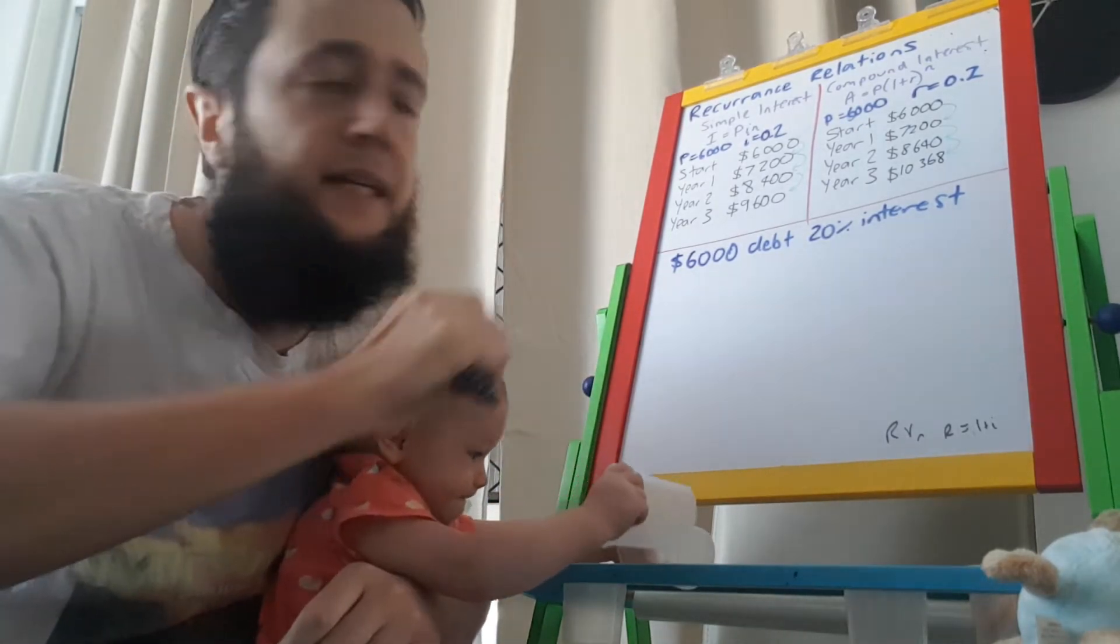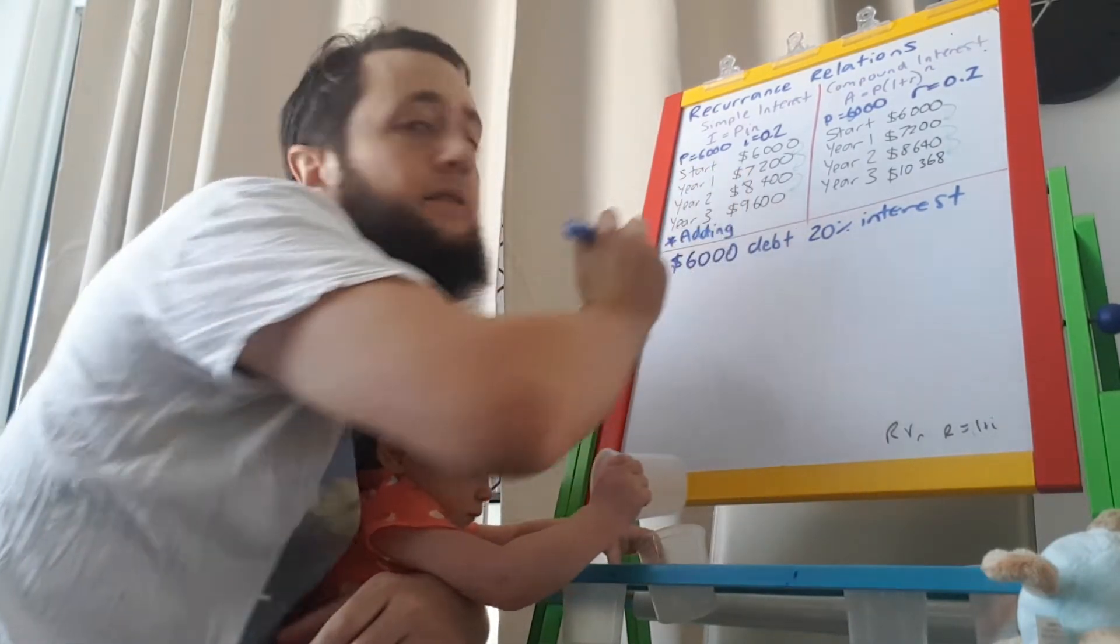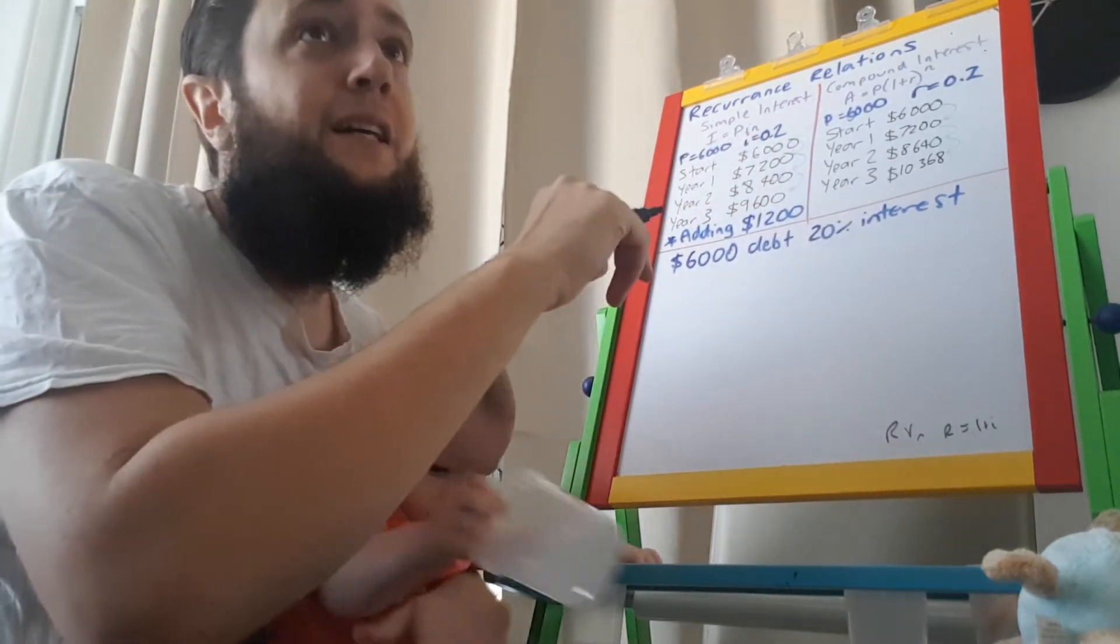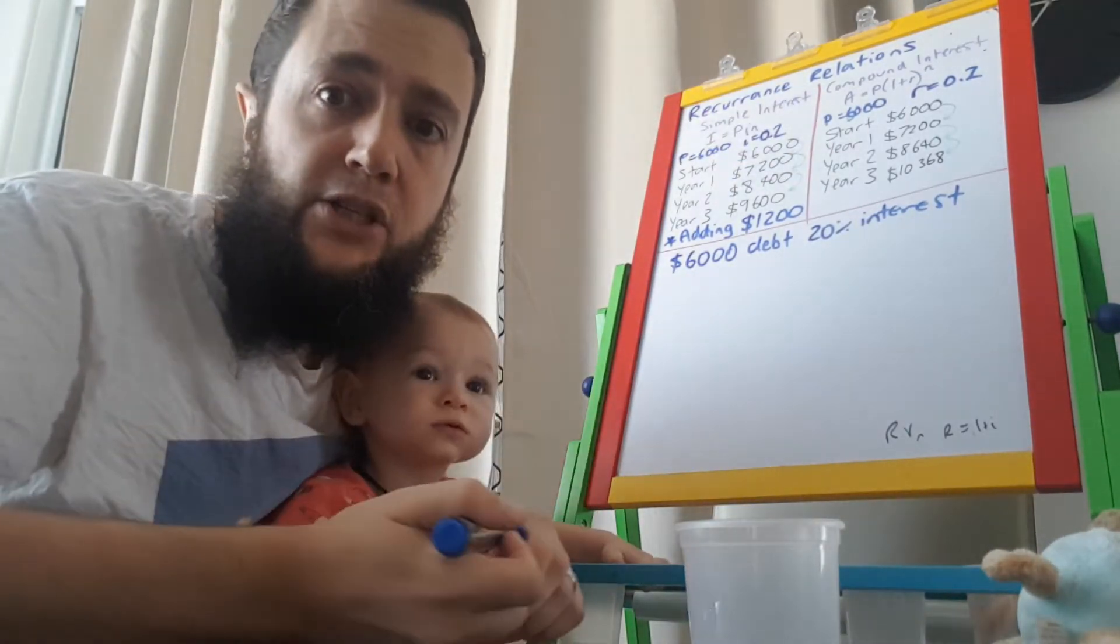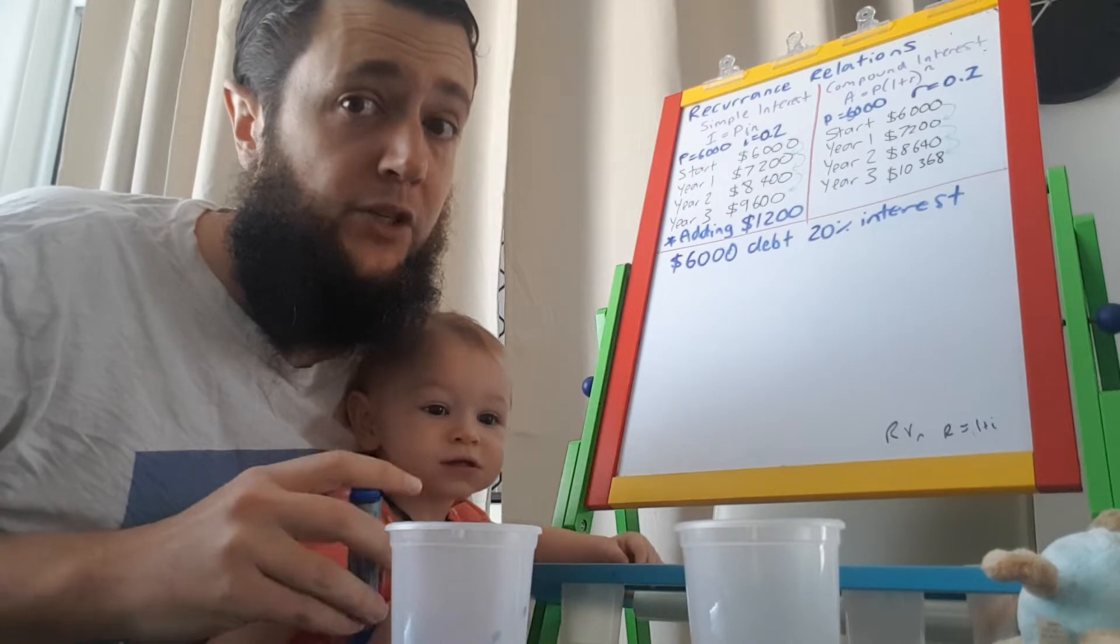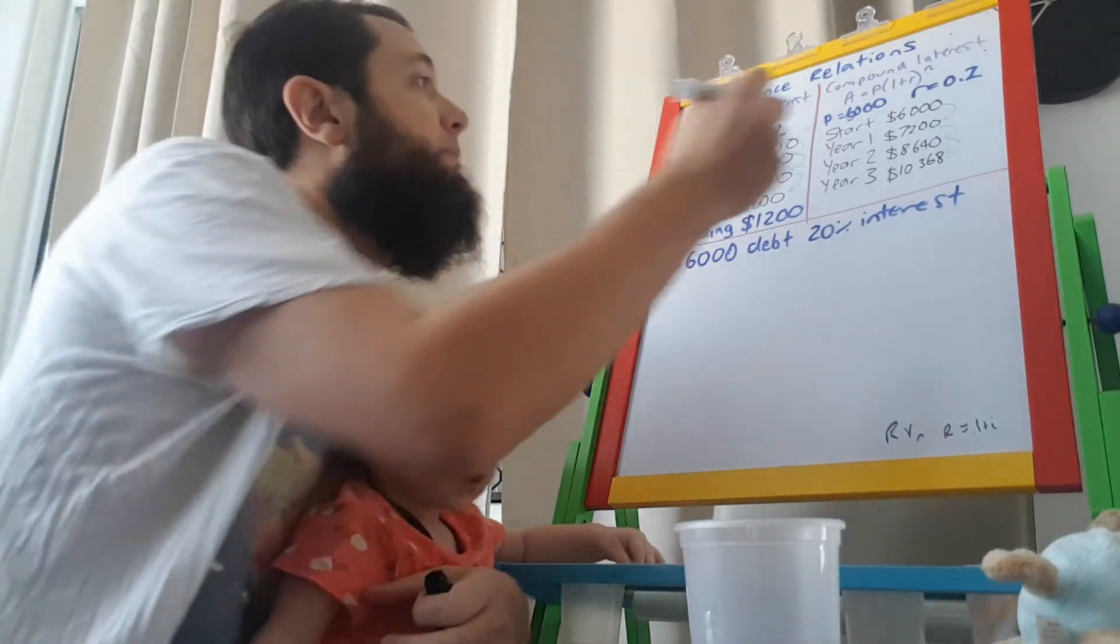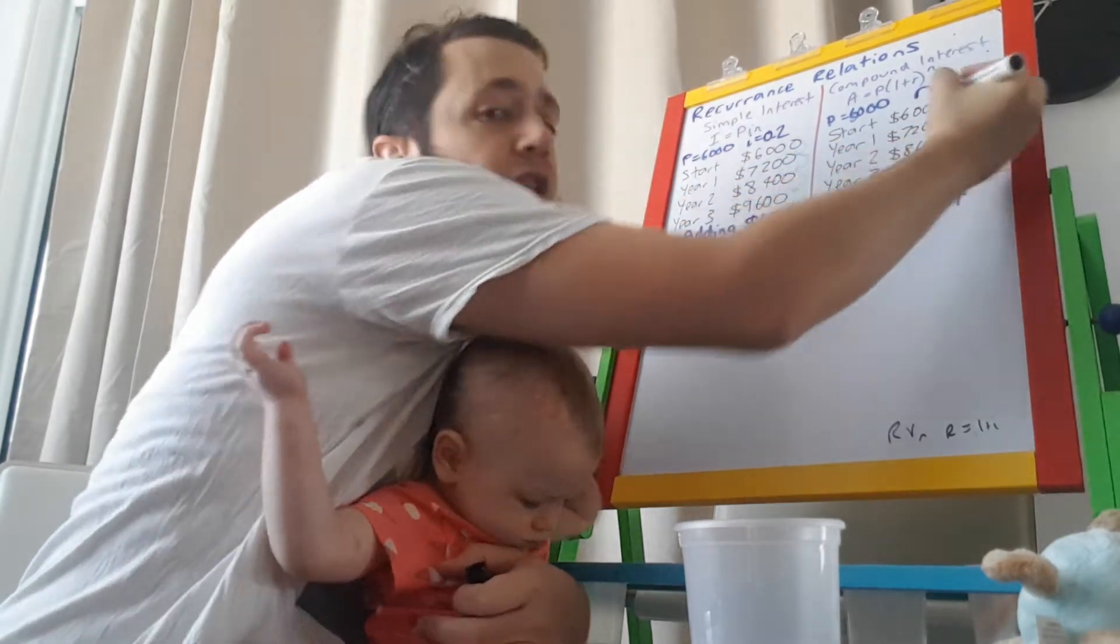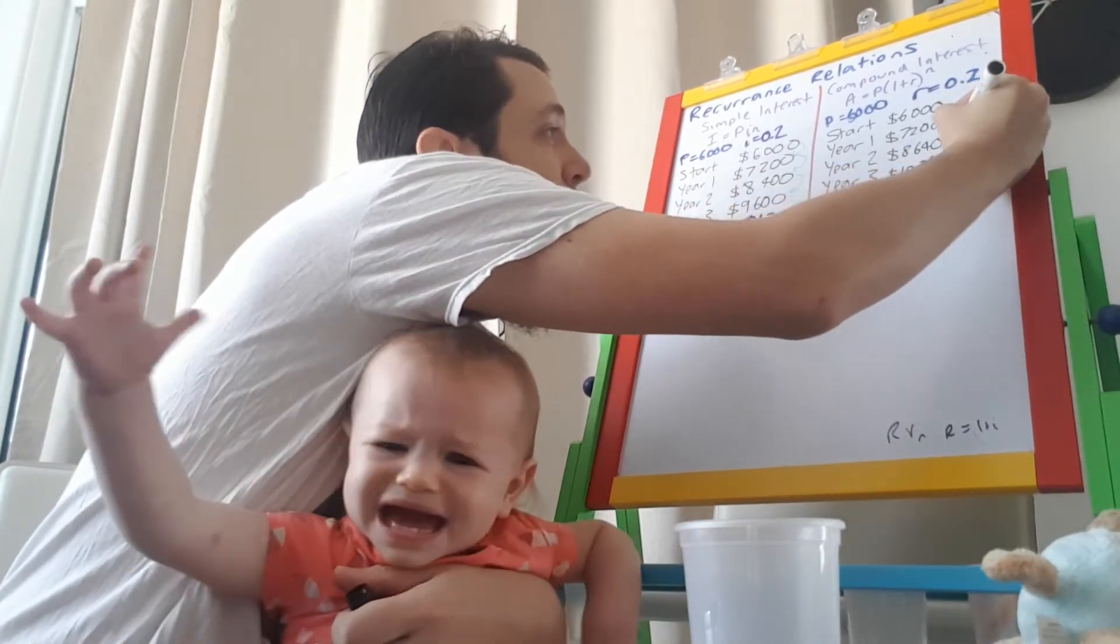So every year, it's adding how much is it adding every year? You can see it's adding 1,200. Over here, the relationship's a bit different. With compound interest, you're actually multiplying by the same thing each time. It's not so obvious. But you'll find that what you are doing each time here is you are multiplying by 1 plus the interest rate, which in this case, the interest rate is 0.2. So you're actually multiplying by 1.2 each time.